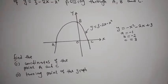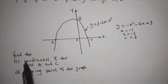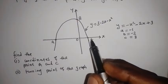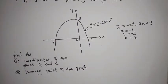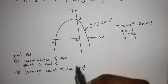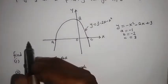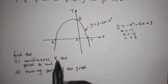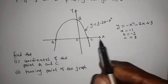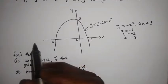Now we are heading in the proper direction. The question asks us to find the coordinates of points A and C. One of the most important things to understand is when you have a point that lies on the X axis.